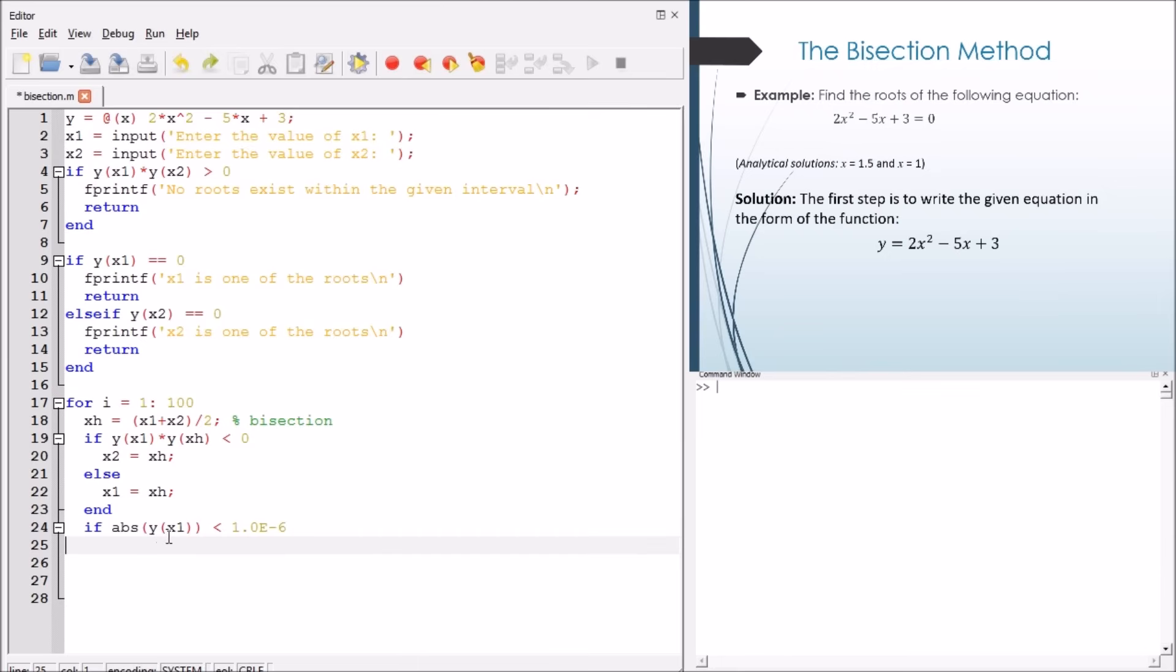Now, we make check for the convergence. If the y correspondent to x1 is less than our very small value, that means it approaches to 0, that means we obtain the solution, we break the loop and print the result. Now let's make a run for the code and we see.